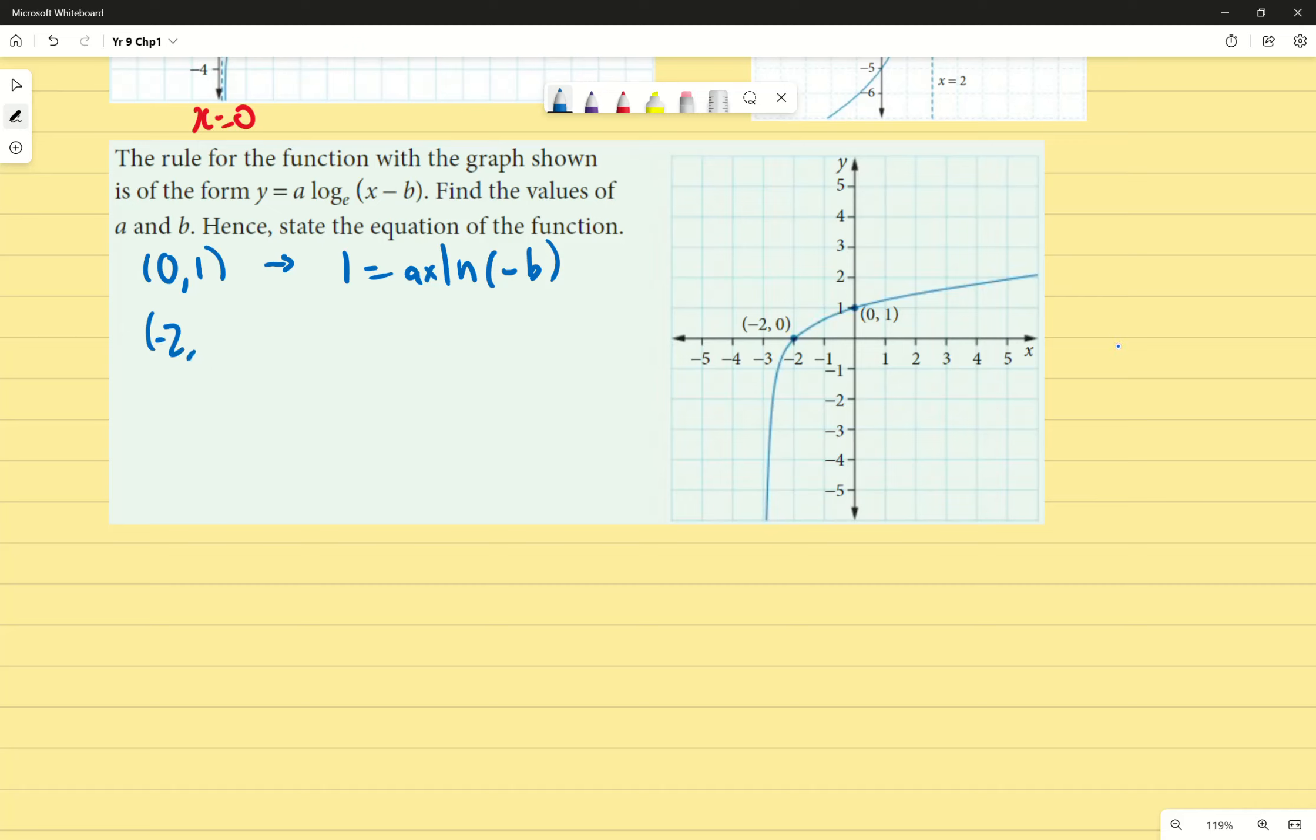If I substitute the point negative 2, 0, I get 0 equals a times log base e of negative 2 minus b. In this scenario, because it's just the same as with any other function, except in this case I've got some extra steps involved, I'm going to be using my simultaneous equations. The difficult part is that if I try to subtract it, it's going to get very difficult to try and rearrange things. So instead, I'm going to divide them, keeping in mind my log laws. So once I do that, I can say, and because I've got the negative 2 minus b, I'm going to put that on top,